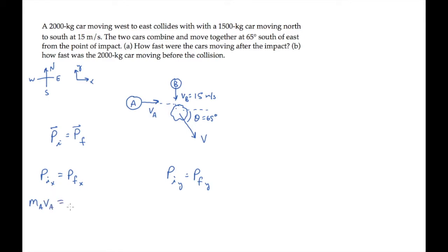After the collision, the horizontal momentum is due to this component of the combined velocity, that's v cos theta, so the momentum there is the combined mass times that component.